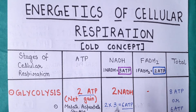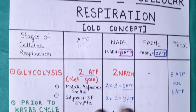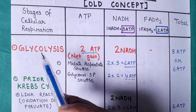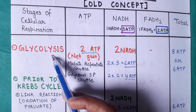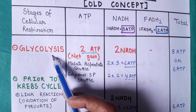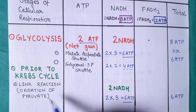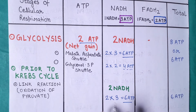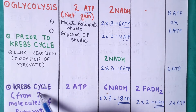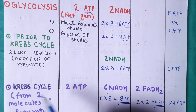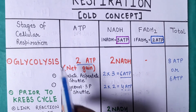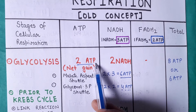Cellular respiration consists of: firstly, glycolysis, in which glucose gets broken down to give two molecules of pyruvate; then oxidation of pyruvate, in which pyruvate gets converted into acetyl-CoA; and then the Krebs cycle, in which acetyl-CoA reacts with oxaloacetate to form citric acid. In glycolysis, we have a net gain of 2 ATP.